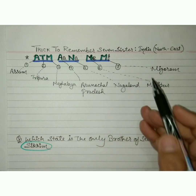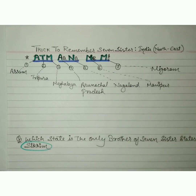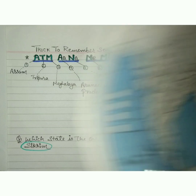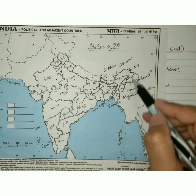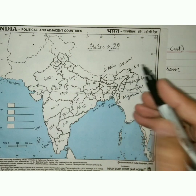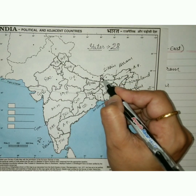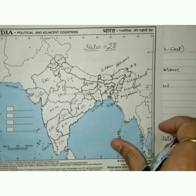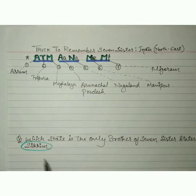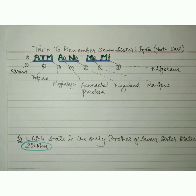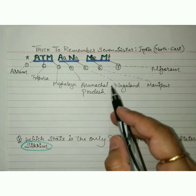Sometimes in examinations, sometimes in interviews, people will ask you: who is the brother of the northeast states? Have a look — there are seven sisters and only one brother, that is Sikkim. How lucky this brother is! The question will be: which state is the only brother of the seven sister states? Your answer should be Sikkim. Hope this trick will definitely help you to remember the northeast states, especially the seven sister states.